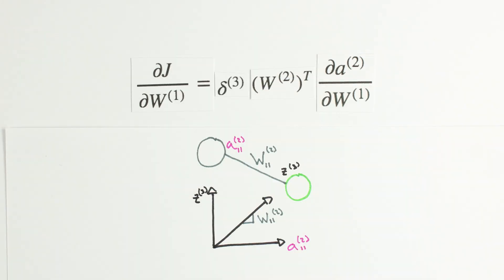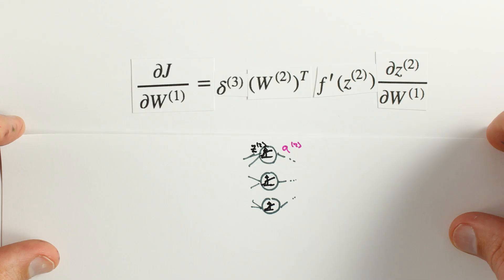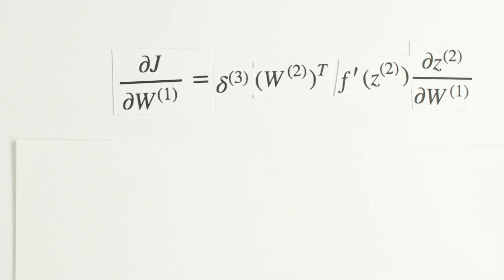Our next term to work on is dA2 dz2. This step is just like the derivative across our layer 3 neurons, so we can just multiply by f prime of z2.